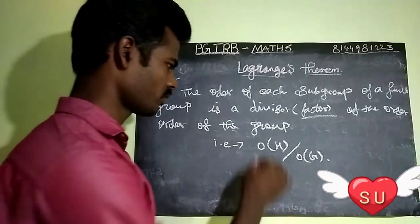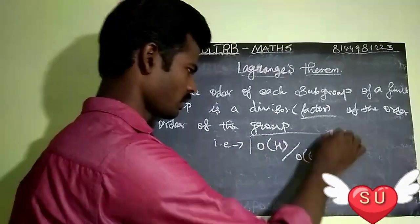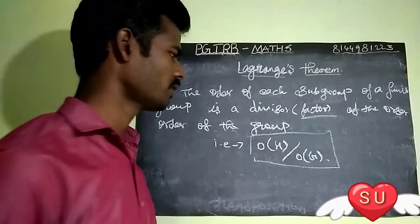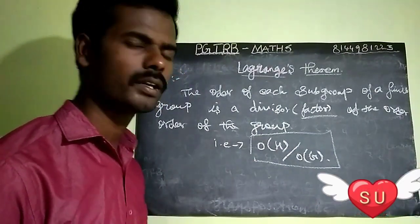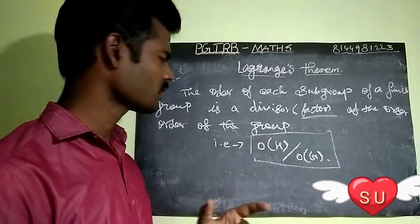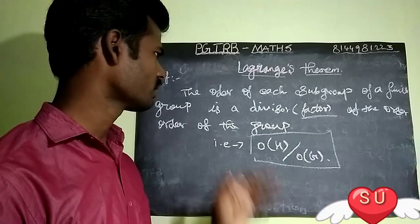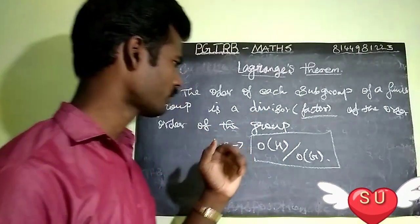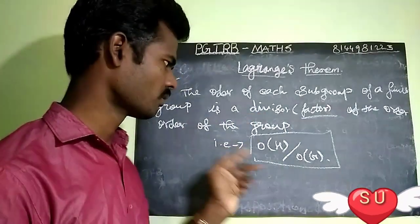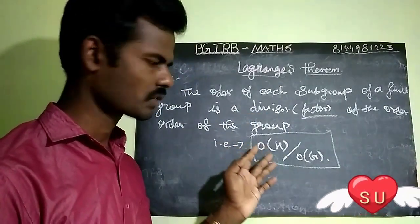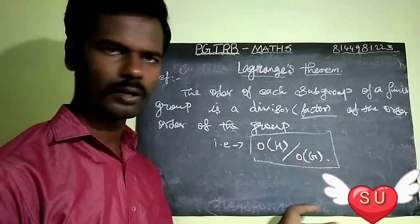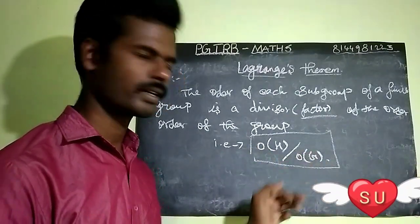The concept is: order of H divided by order of G. So the order of each subgroup of a finite group is a divisor of the order of the final group — that is, only a divisor.